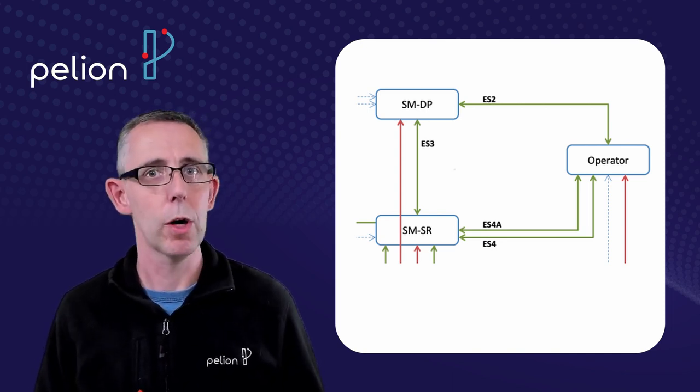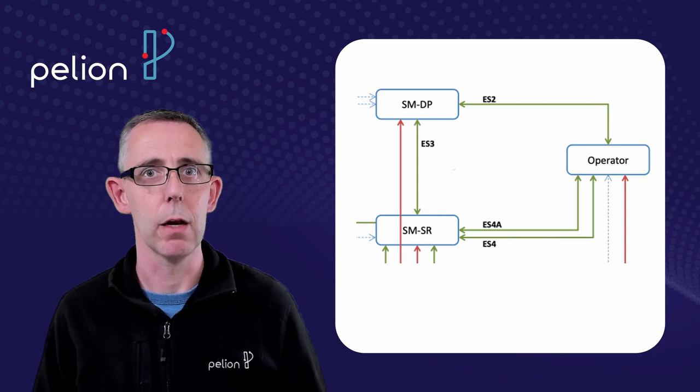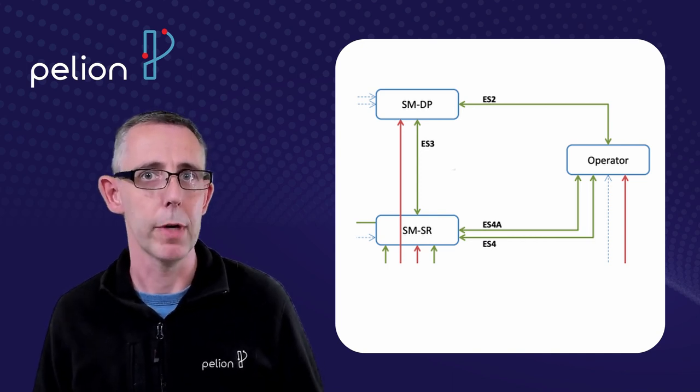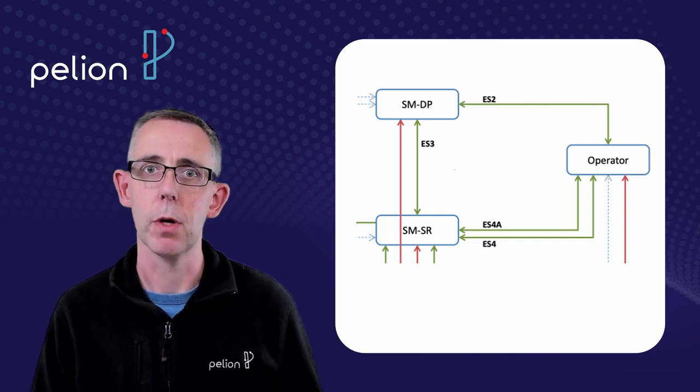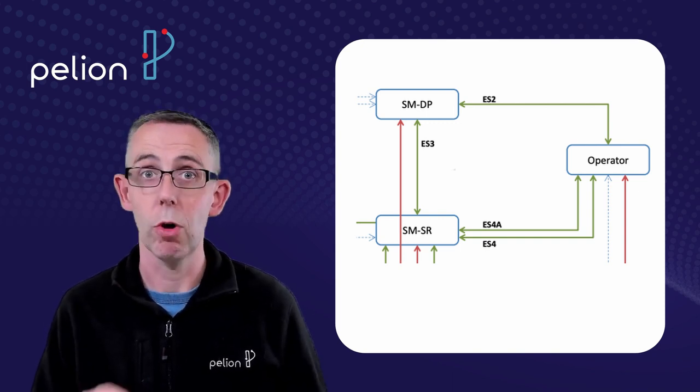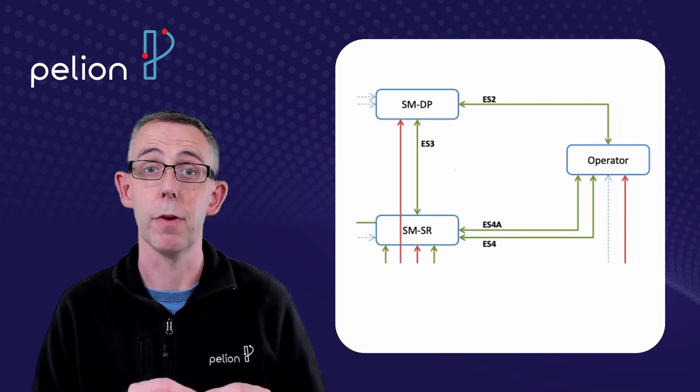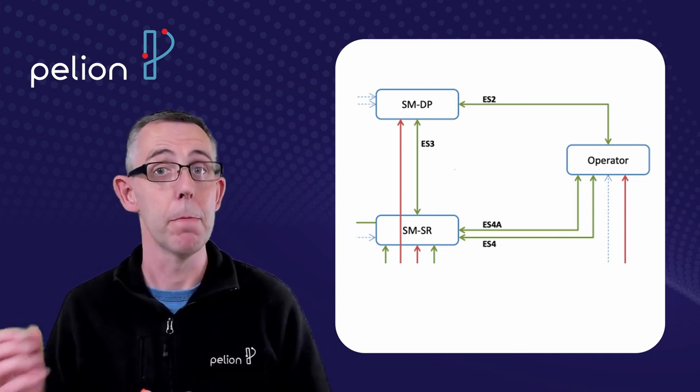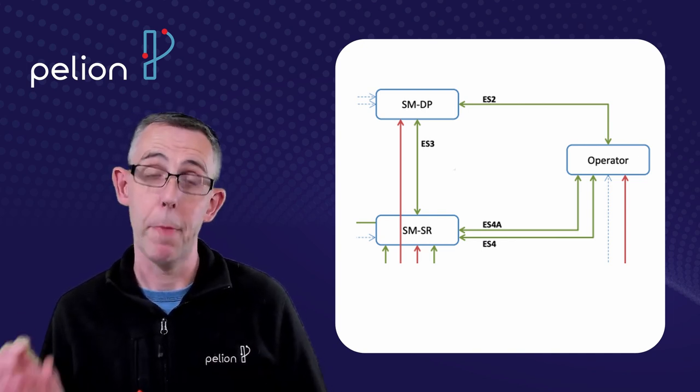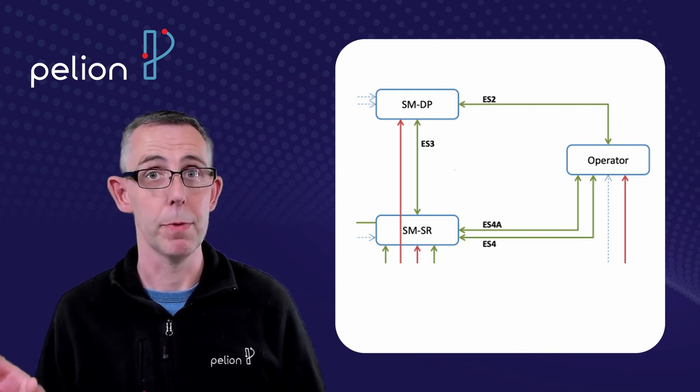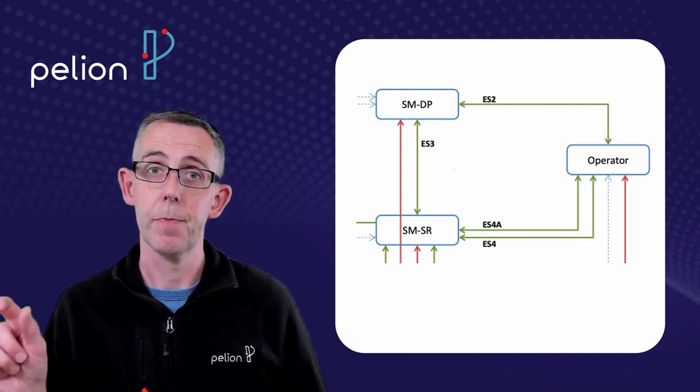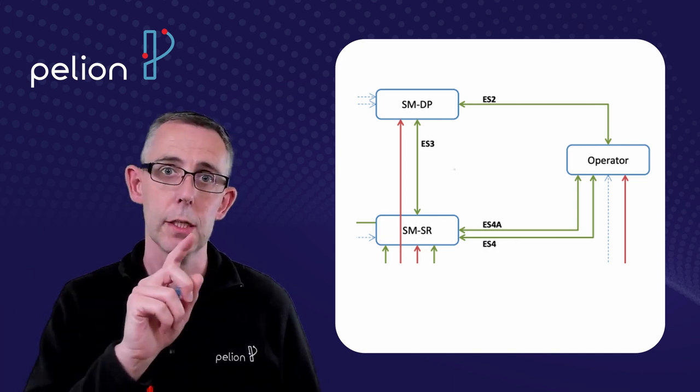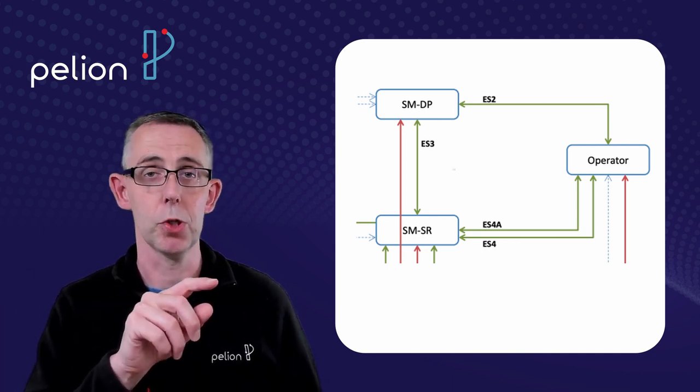When you start to work with a more agile environment where you're downloading profiles the network operators similarly need to take control of what those SIM cards are doing but now they're not in control of actually creating a card with those profiles on it. So instead the mobile network operator prepares a profile ready for deployment over EUICC profile delivery and that ID is loaded into the subscription manager data preparation module.